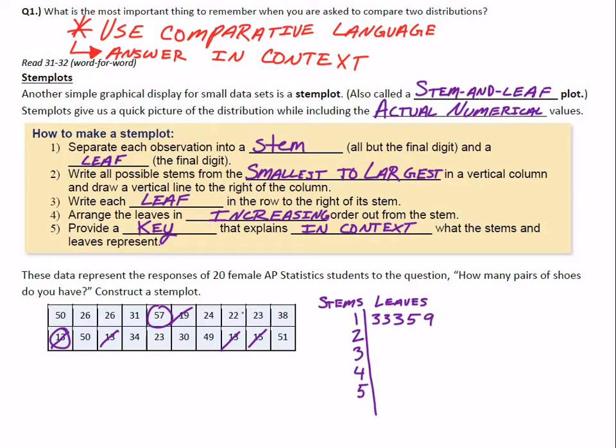How about for the 2 stem? Who do we have in the 20s here? Looks like we've got a 22, a 23, another 23, a 24, and two 26s. Let's organize those: 2, 3, 3, 4, 6, 6.